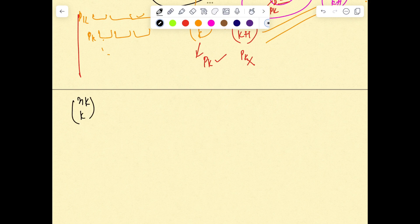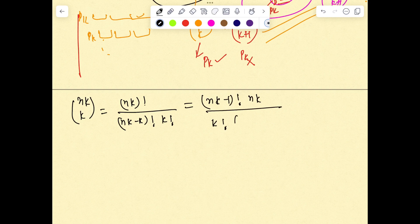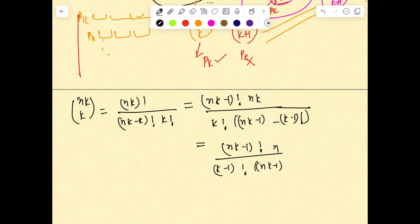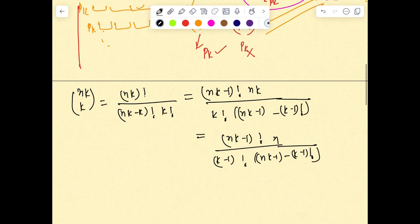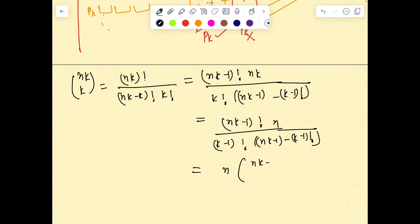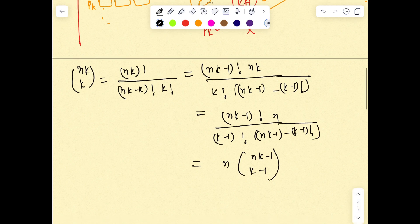Now my solution will be based on a basic idea. nCk can be written as nk factorial divided by (nk-k) factorial times k factorial. This can be written as (nk-1) factorial times nk divided by k factorial times (nk-1)-(k-1) factorial. It clearly boils down to n times (nk-1)C(k-1).